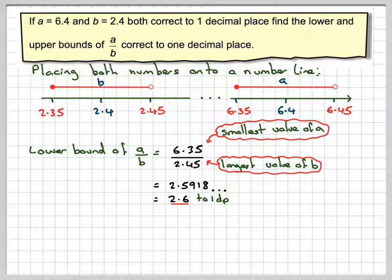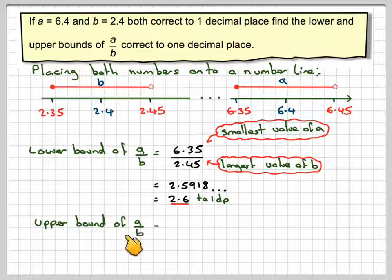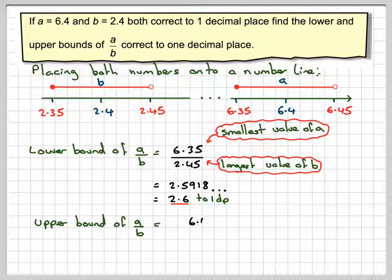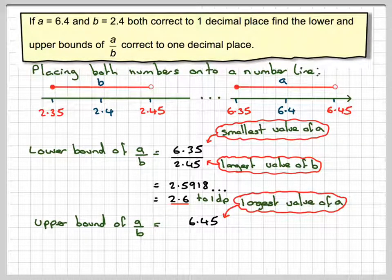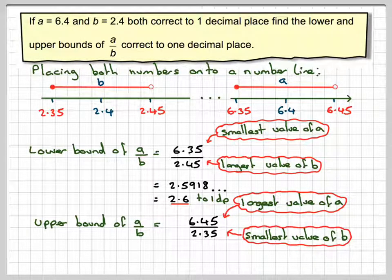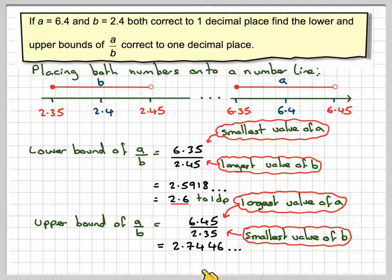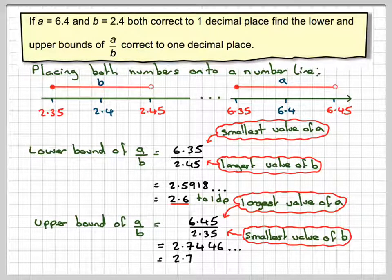The upper bound of A divided by B: you want the largest value of A divided by the smallest value of B. That comes out to be 2.7446, which gives 2.7 to one decimal place.